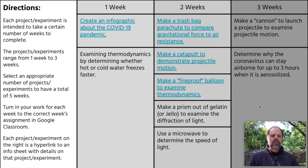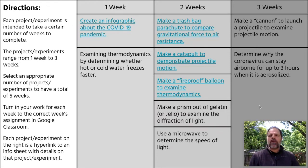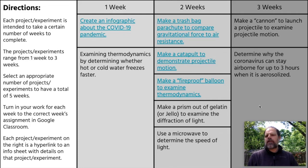There are two projects or experiments that take one week, five that take two weeks, and two that take three weeks. You are going to select an appropriate number of projects or experiments to total five weeks. For example, you can select one one-week and two two-week projects, or one two-week and one three-week project.